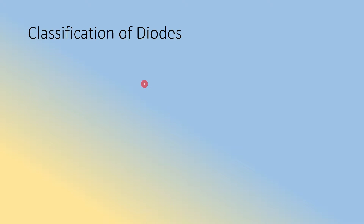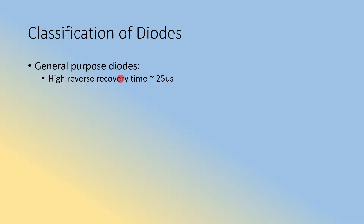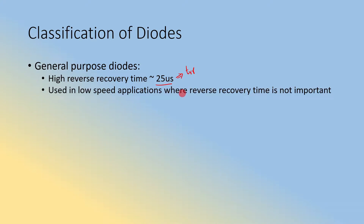The first classification is general purpose diodes. The first important property is that general purpose diodes usually have a very high reverse recovery time, on the order of 25 microseconds. That means when transitioning from on to off position, it takes roughly 25 microseconds — so TRR is approximately 25 microseconds. Because of this higher reverse recovery time, they are used in low speed applications where reverse recovery time is not very important.